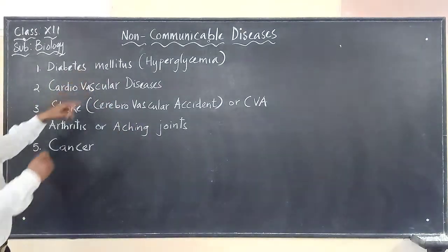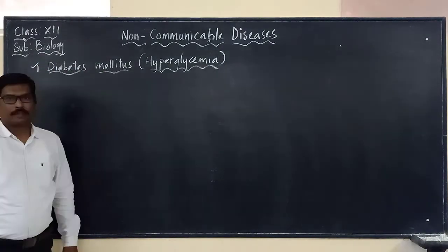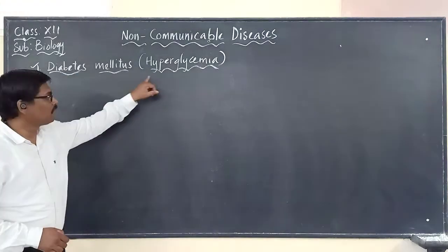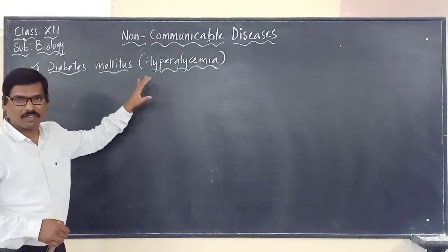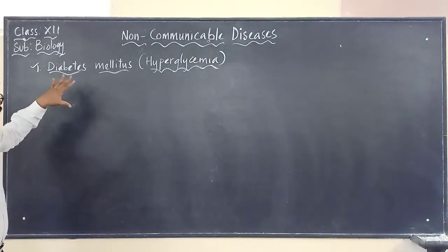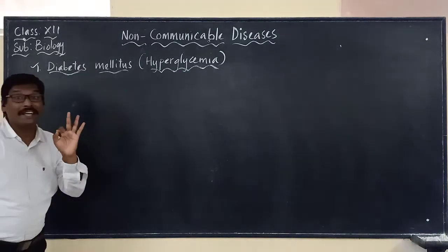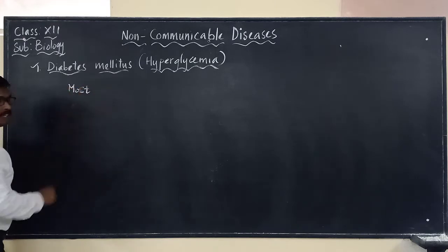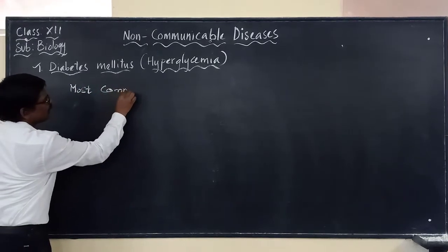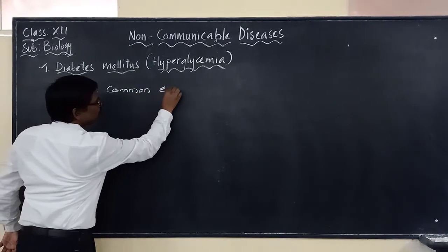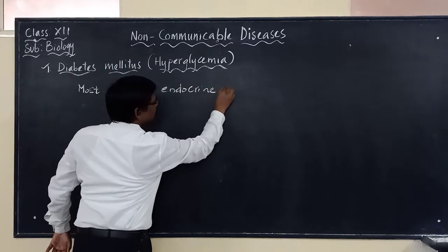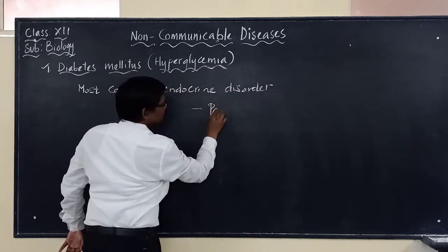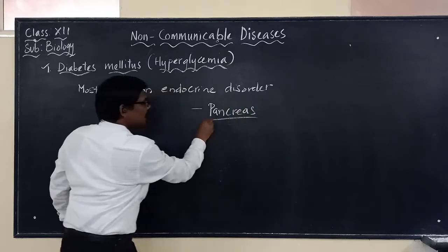We will start with diabetes mellitus, also called hyperglycemia. This is the most common endocrine disorder of the pancreas, meaning it is related to the pancreas.